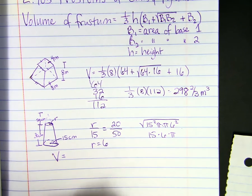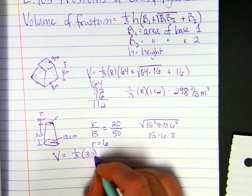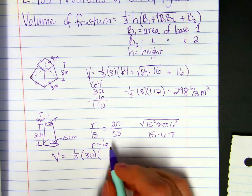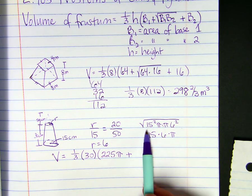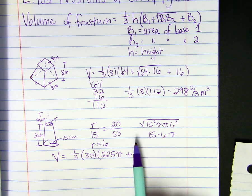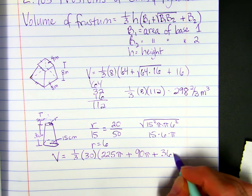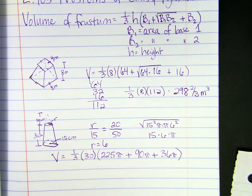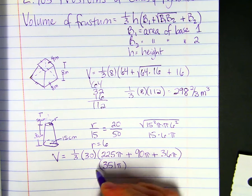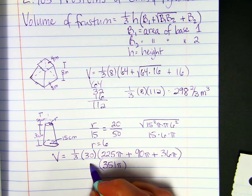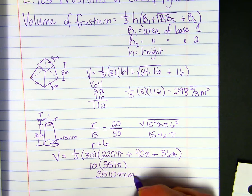To find the volume, we do one-third times the height of the frustum, which is 30, times pi R squared, so 225 pi, plus this square root bunch, 15 times 6 is 90 pi, plus 36 pi. When we add all this together, we get 351 pi, then one-third of 30, which is 10. So the volume is 3,510 pi centimeters cubed.